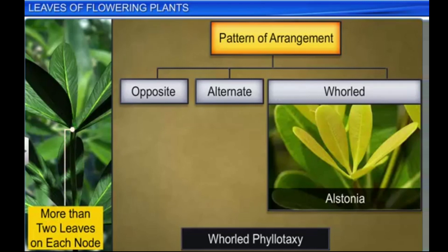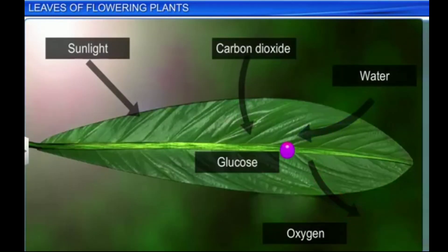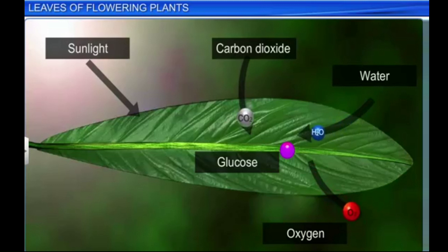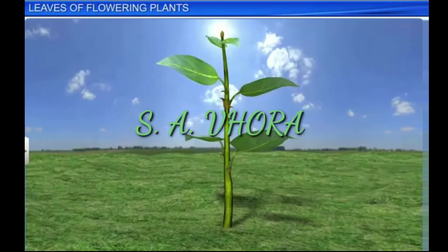A leaf has many functions apart from the primary function of photosynthesis. Most leaves have stomata which open and close, and they regulate carbon dioxide, oxygen, and water vapor exchange with the atmosphere. Leaves are therefore an important part of a plant. Apart from carrying out the chief functions of photosynthesis, they also store food and provide protection and support to many plants.